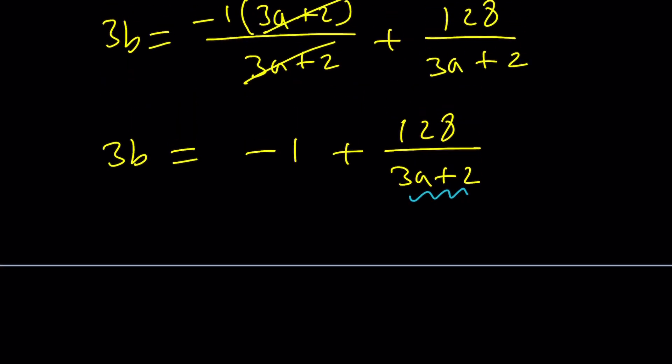For example, divisors of 128. Obviously 1 is a divisor, but if 3A plus 2 equals 1, that means 3A is negative 1. That's not going to give you an integer. How about 2? If 3A plus 2 is 2, then A is 0. A equals 0 is going to work. When you divide 128 by 2, you're going to get 64. Negative 1 plus 64 is 63. That works too. Isn't that amazing?